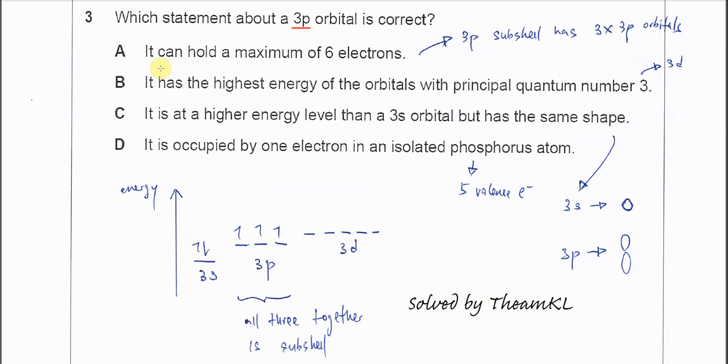Okay, so if you understand this difference, let's go through one by one. It can hold a maximum of six electrons, so wrong, because it's mentioned orbital. 3p orbital, one orbital, it can accommodate two electrons only. So that's why this is wrong.